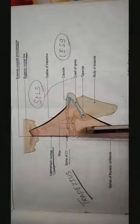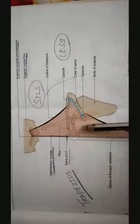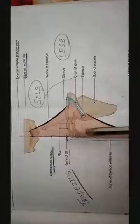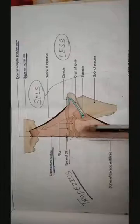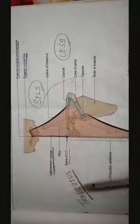Trapezius muscle lie on either side of the midline. Both side muscle together form diamond or trapezoid shape, hence the name trapezius muscle.